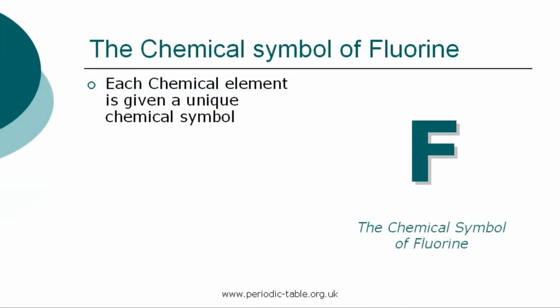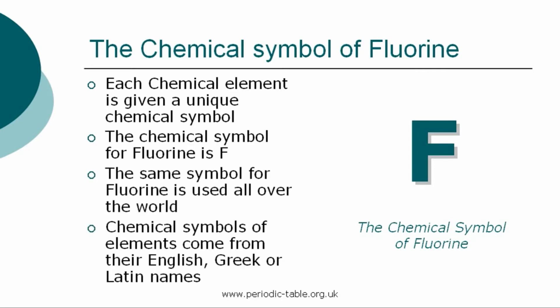Each chemical element is given a unique chemical symbol, which is used all over the world. The chemical symbol for fluorine is F. The chemical symbols of elements come from their English, Greek, or Latin names. The first letter of a symbol is always a capital letter, and if there are any subsequent letters, they are expressed in lower case.